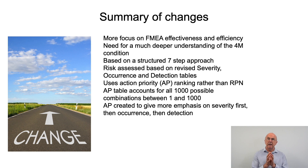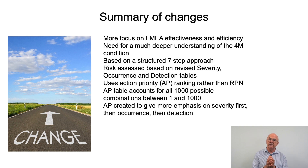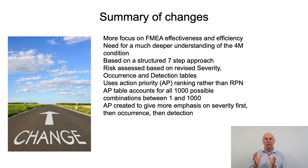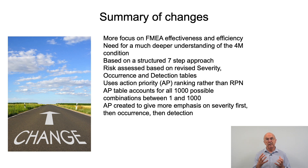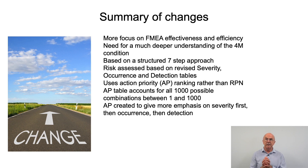One of the fundamental differences is the new handbook uses an action priority ranking, shortened to AP ranking, rather than a risk priority number. The AP table accounts for all one thousand possible combinations between one and one thousand. So while we still score severity, occurrence, and detection on a one-to-ten scale, we don't multiply severity times occurrence times detection. Instead we look at a table that gives us an action priority ranking, which gives more emphasis to severity first, then occurrence, then detection.